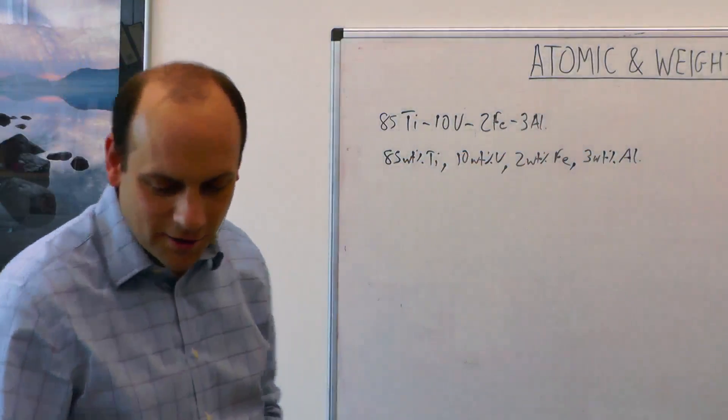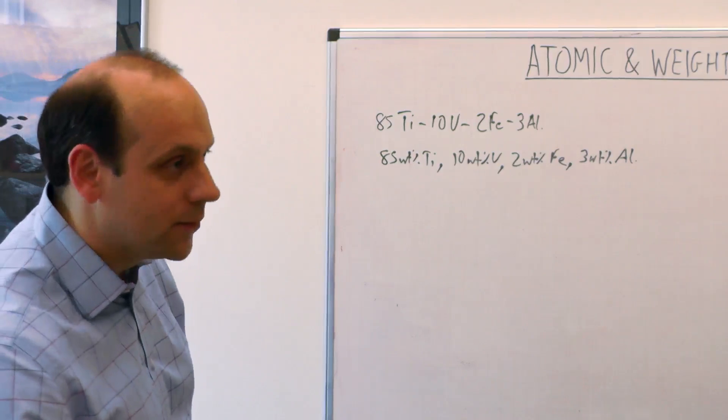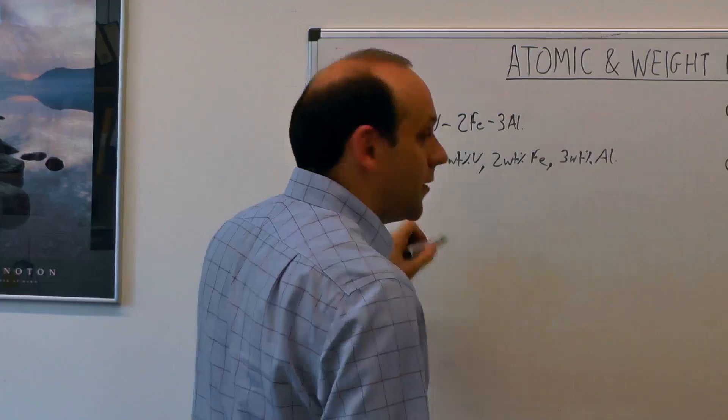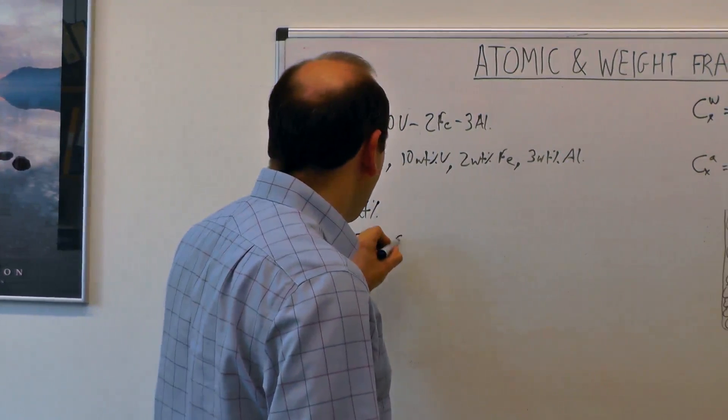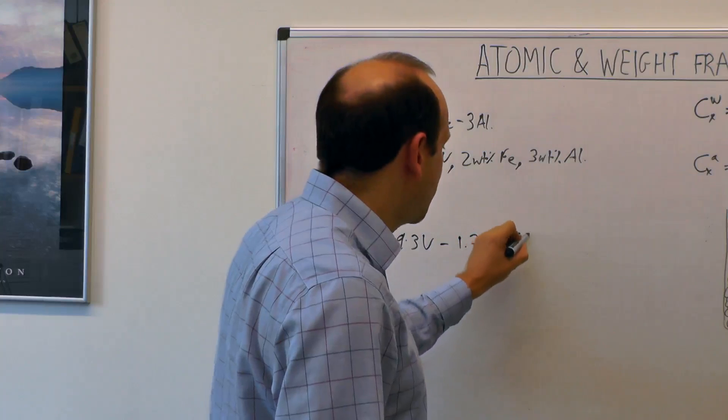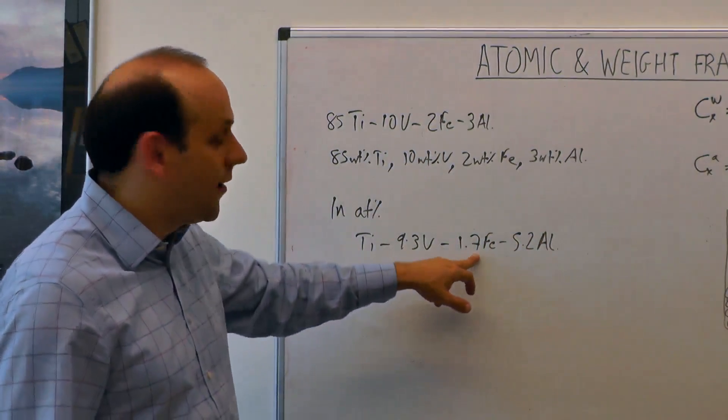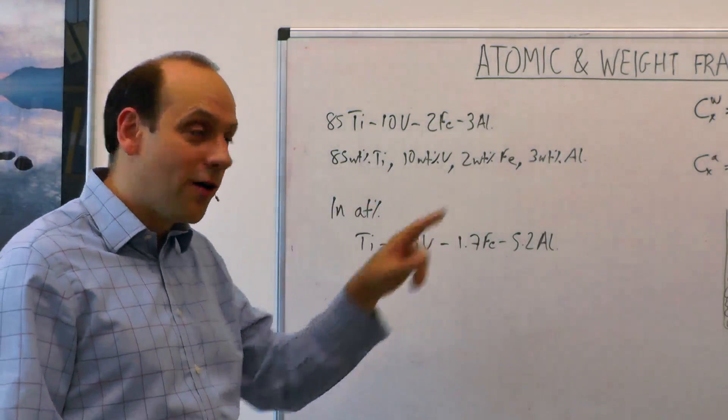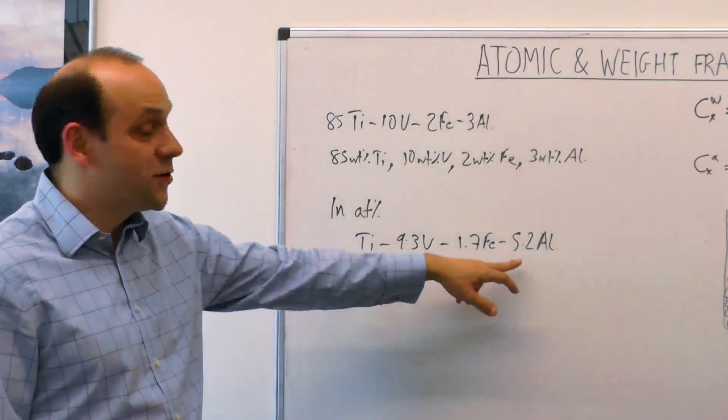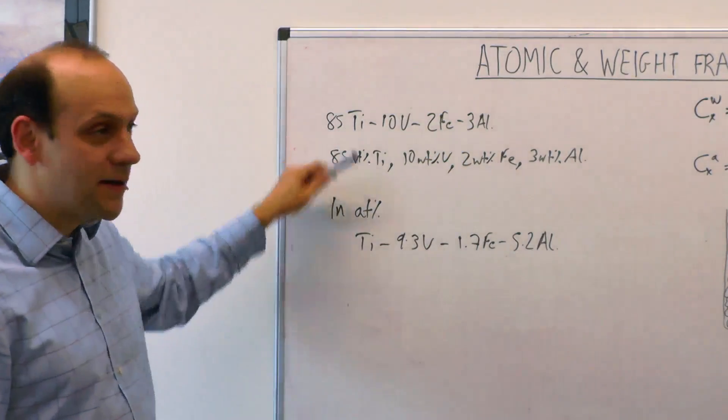If you go through this calculation, which I'll leave you to do to check and calculate the atom fractions, you find that you get quite a different set of numbers. In atom percent, we get a composition which is Ti-9.3-Vanadium-1.7-Iron and 5.2-Aluminum. If you look at a periodic table, the reason for that is that Vanadium and Iron are a little bit lighter than Titanium, but they're on the same top row of the transition metals. But Aluminum is very much lighter, so the atom fraction is very much higher than it is in weight. This is about a 20th Aluminum atoms, although it's only about a 30th Aluminum by weight.